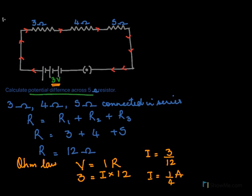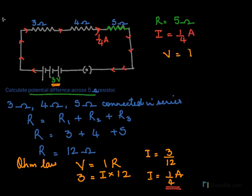Next, we have to find the potential difference across the 5 ohm resistor. The resistance is 5 ohms, and the current passing through it has already been calculated as 1/4 amperes. So for the 5 ohm resistor, the current passing through it is 1/4 amperes. We again use Ohm's law: V equals I times R.